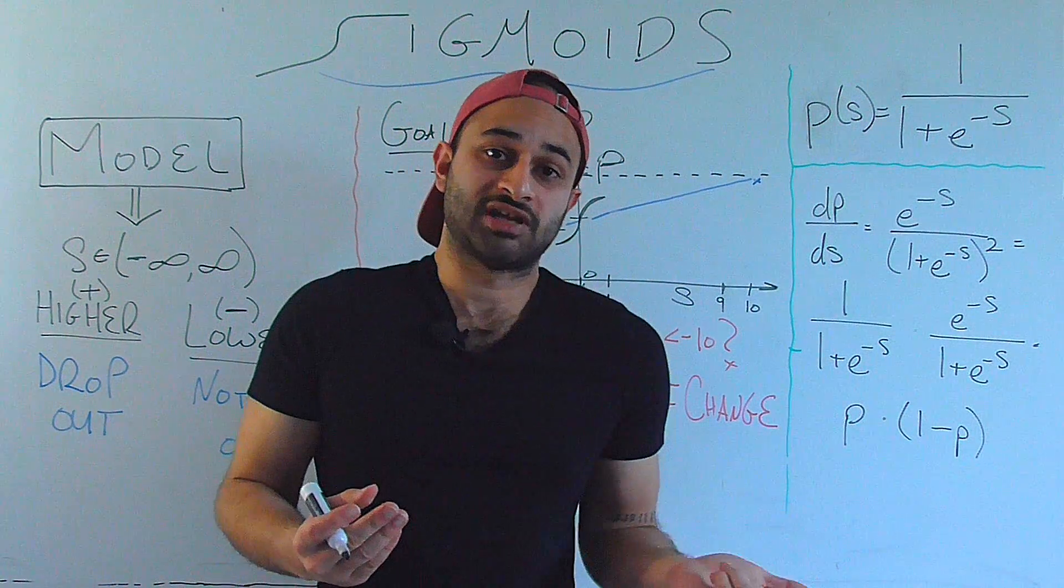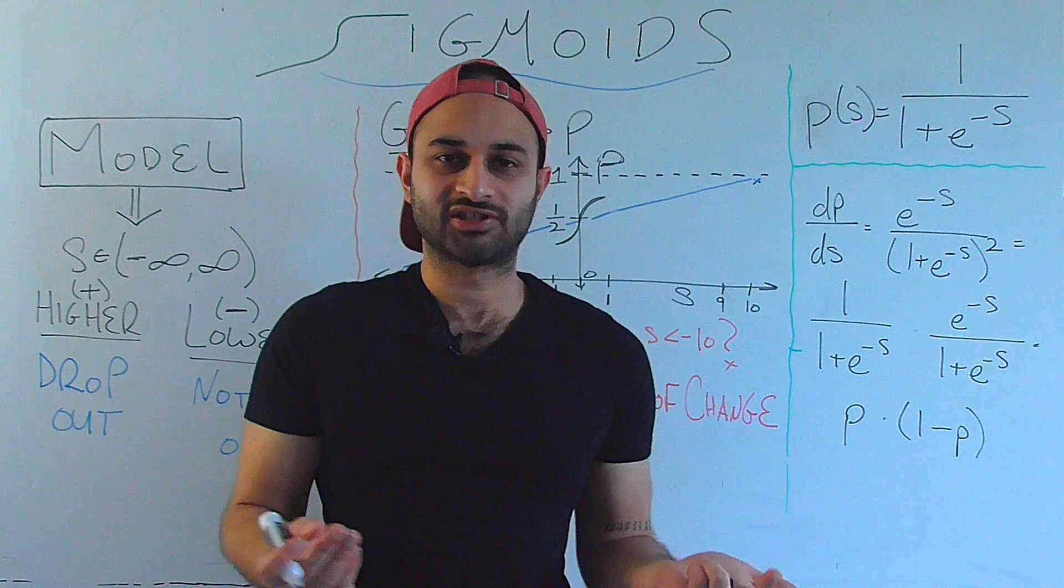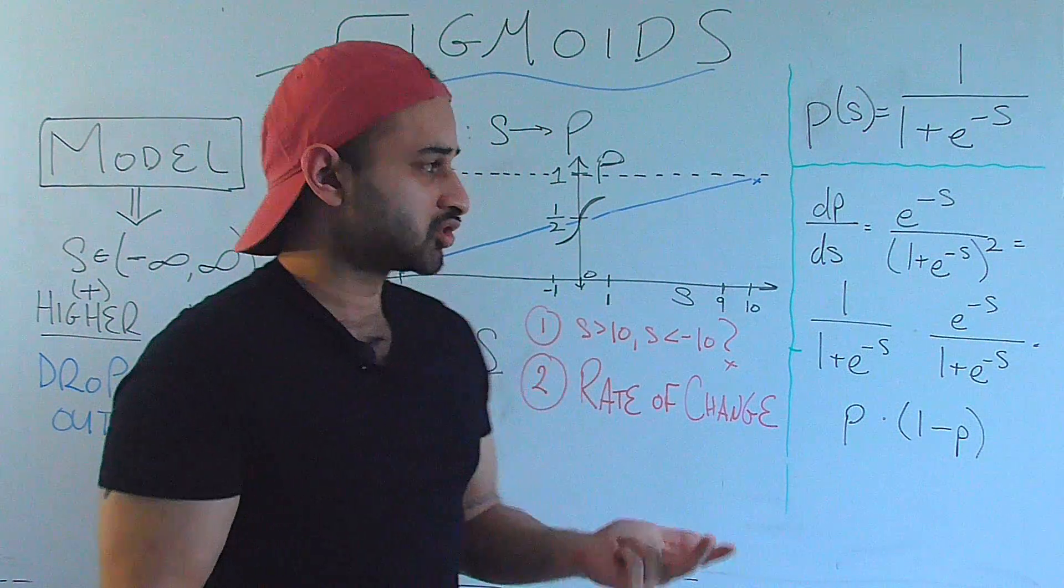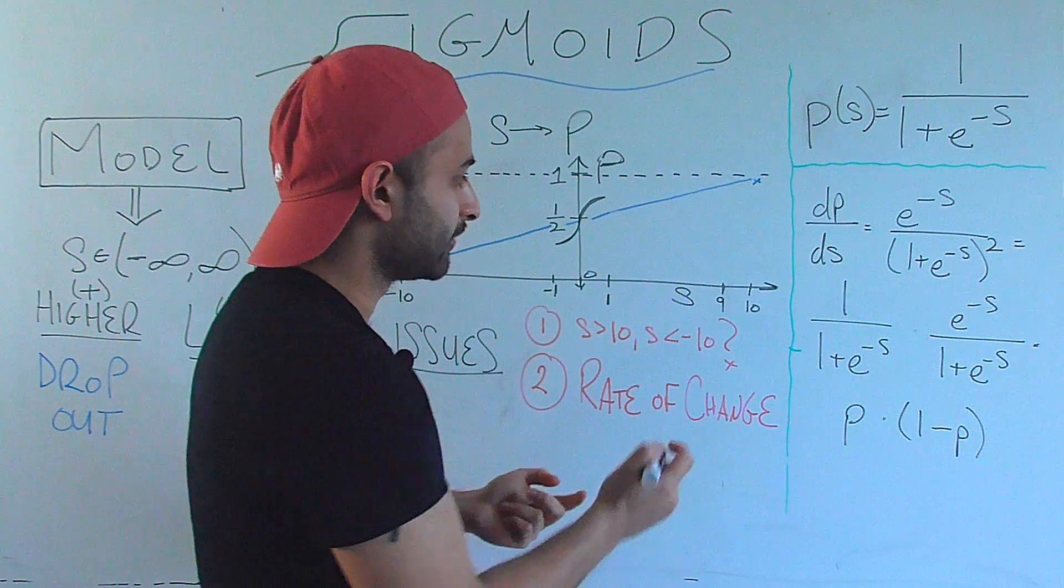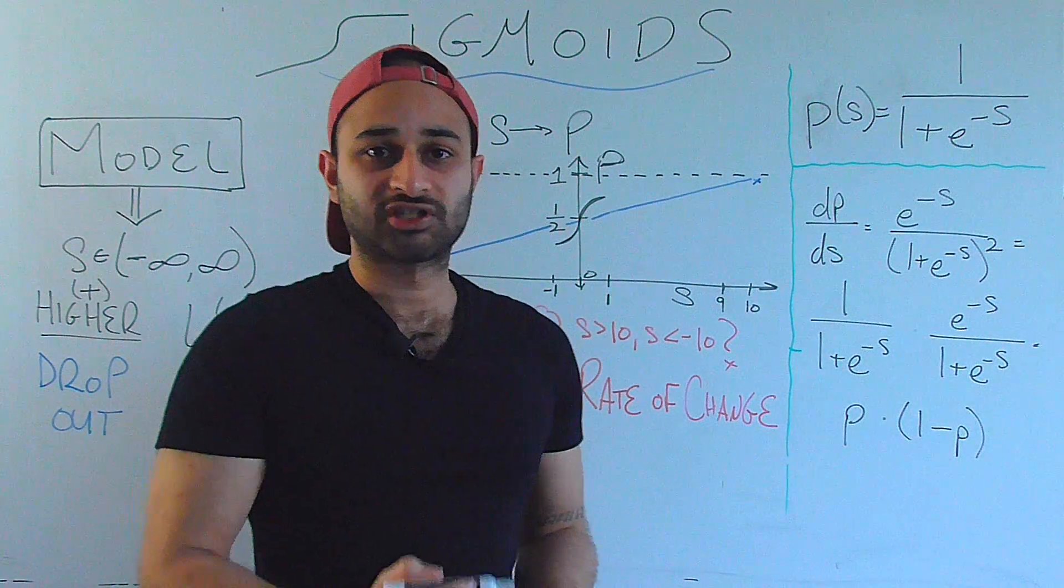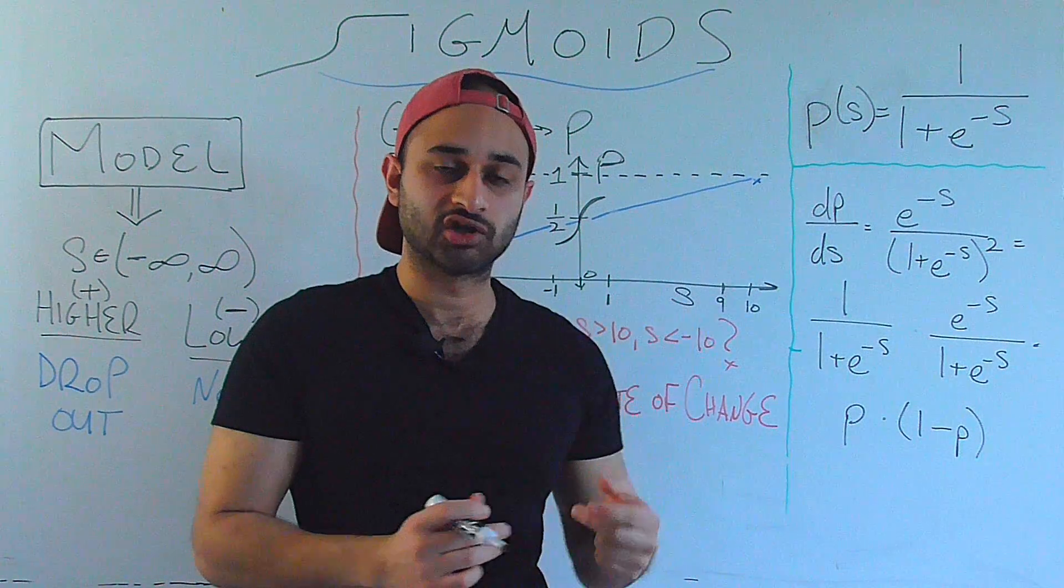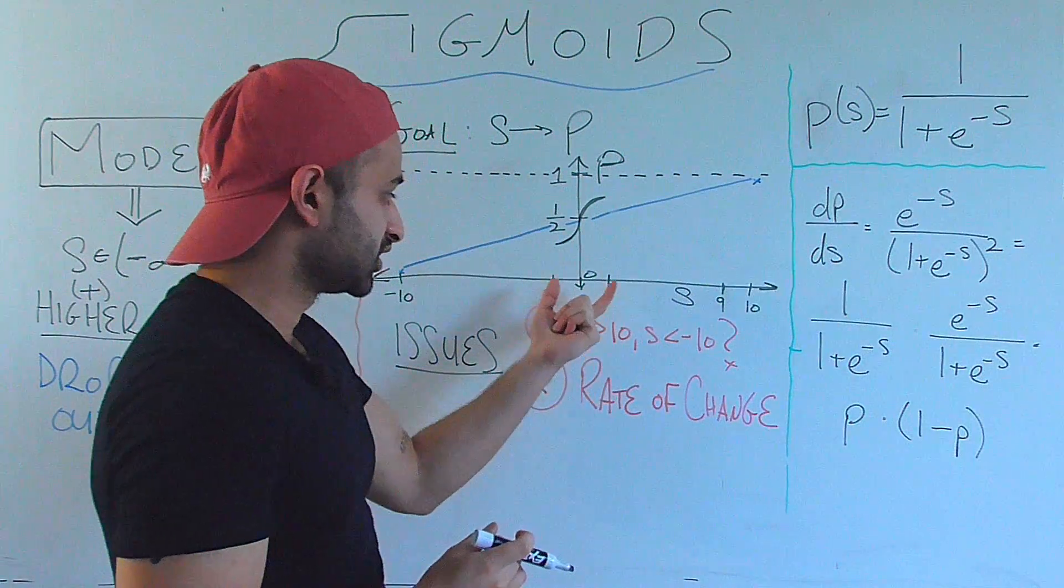And now I said what if their score were 10? Well, I still have a pretty high evidence. Things haven't changed all that much. So another way of saying that mathematically is that when we get out here to the boundaries of our function, we're expecting the probability not to change by much for these equal changes in score.